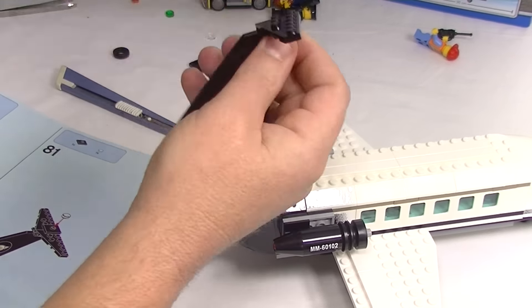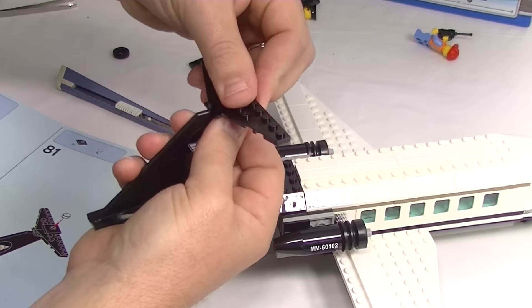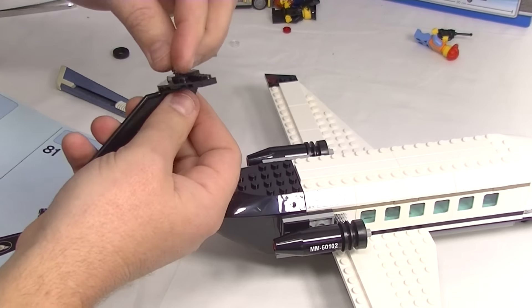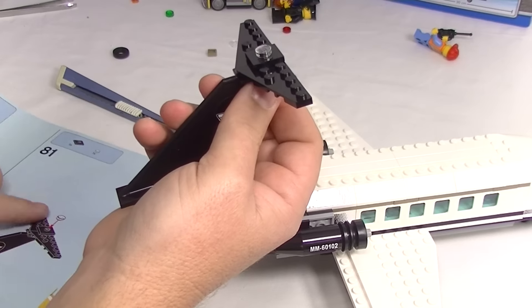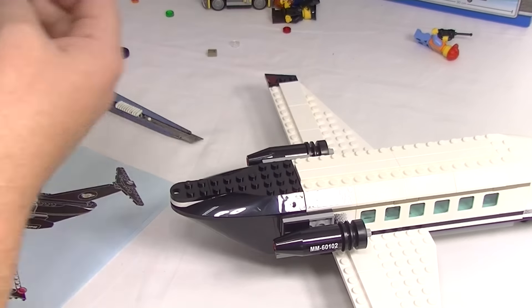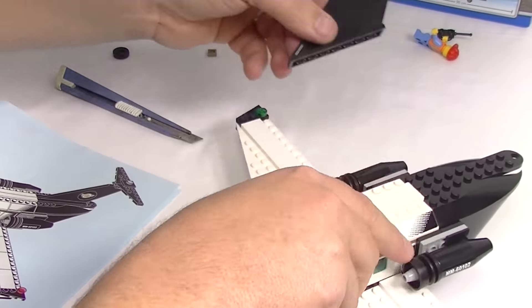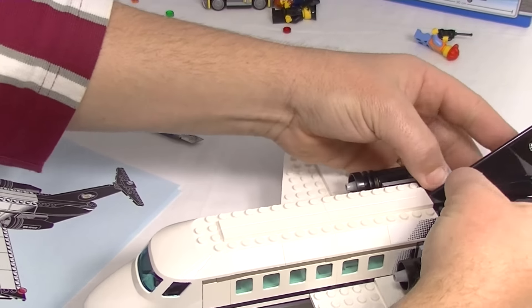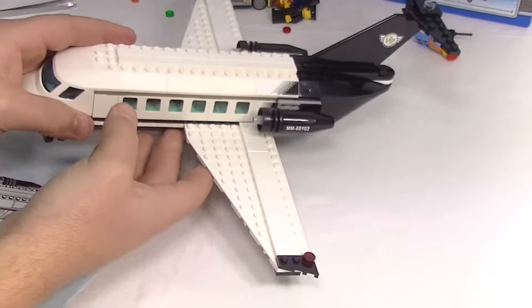Now put the angle plates on there with a tile and a light. And that goes on and that is our plane. Wow, I am pretty impressed with that. I think that looks very cool.